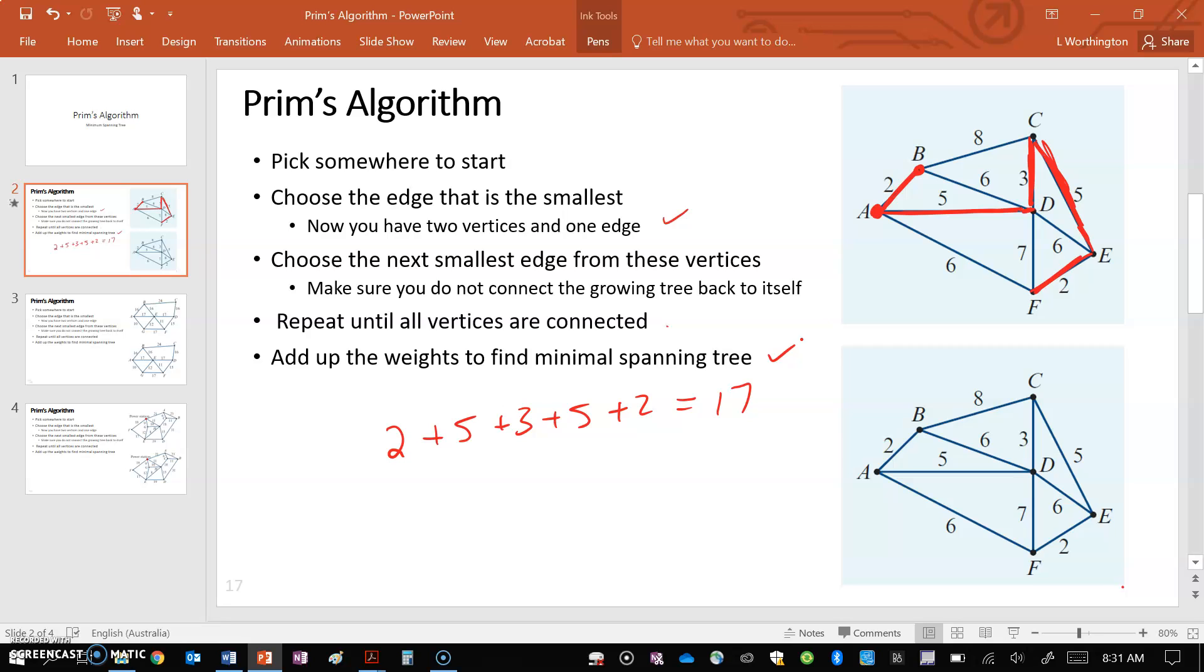Now just to prove that you get the same if you start somewhere else, let's start at D. The smallest connection to D is 3. The smallest connection now is a 5 here or a 5 here. So let's join this one up.